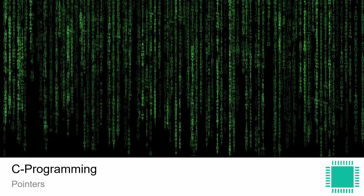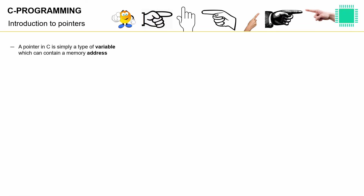It's time, my friends — let's get into pointers. A pointer in C is simply a type of variable which can contain a memory address. A pointer in C is simply a variable — it is a variable where we write memory addresses inside, but it is a variable and nothing more than that.